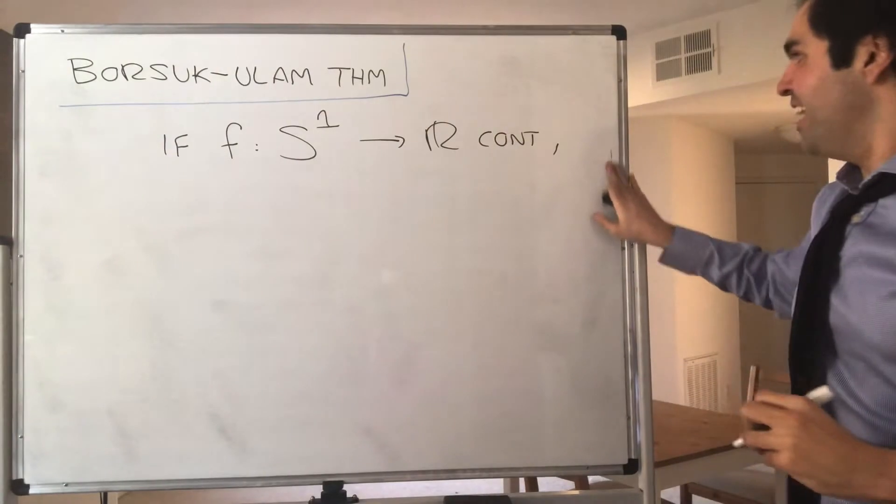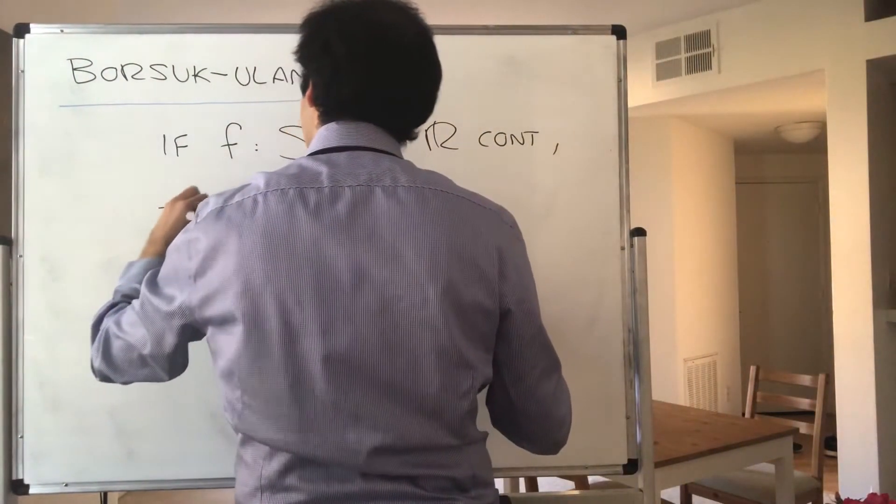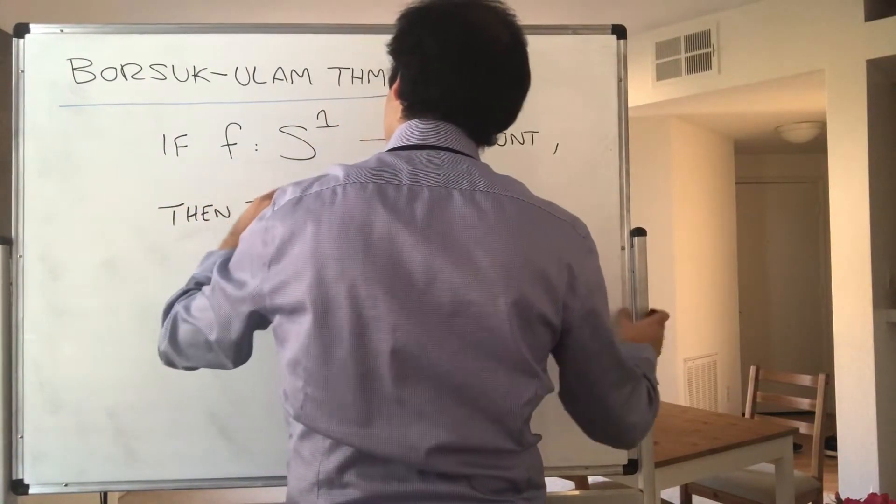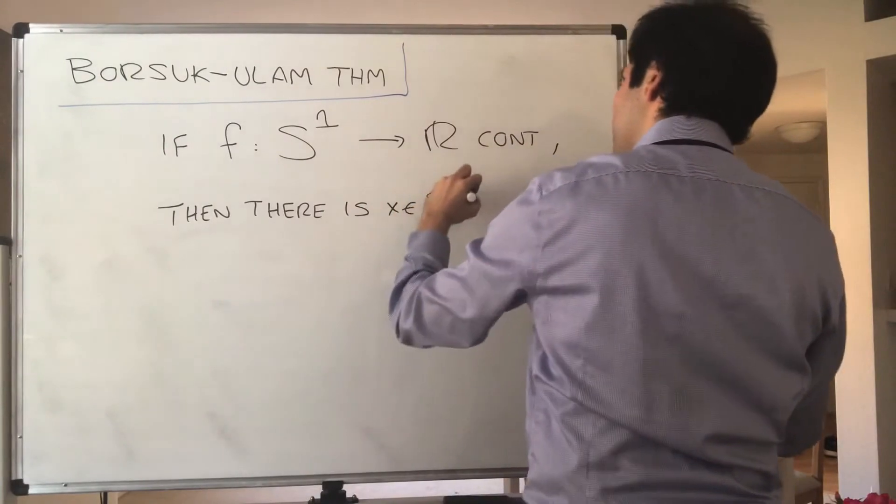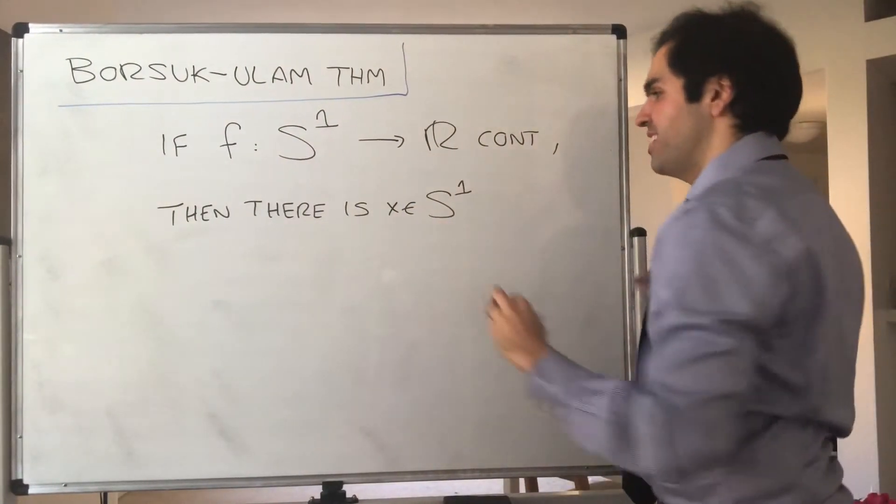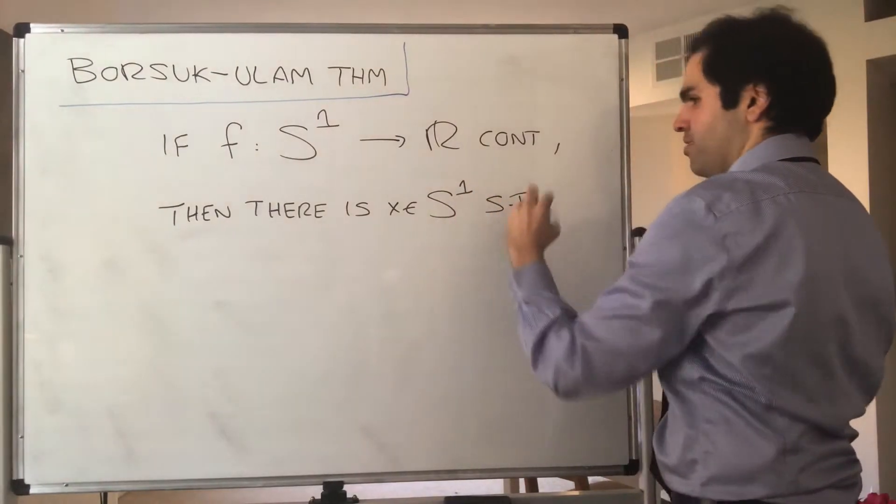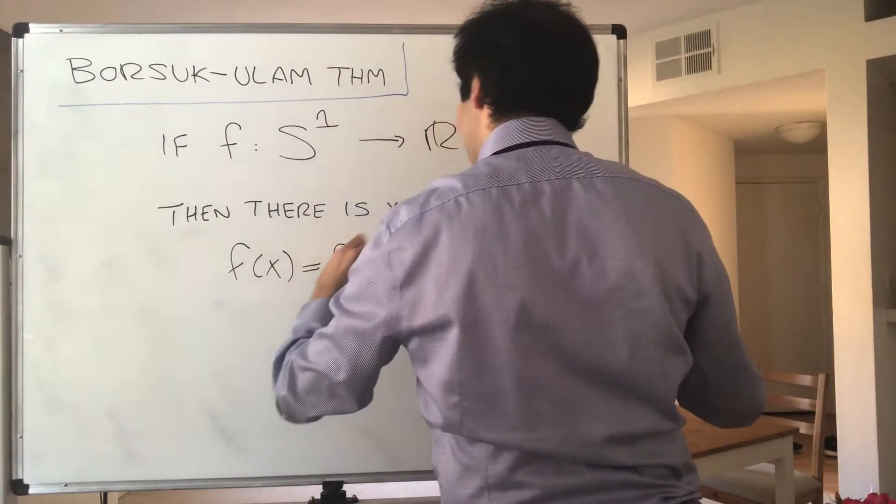And what it says is the following incredible thing. Suppose you have a function f from, let's say, the unit circle in R² to R that's continuous. Then there are two antipodal points on the circle. So there is x in S¹ such that the point x and minus x have the same value, such that f(x) equals f(-x).